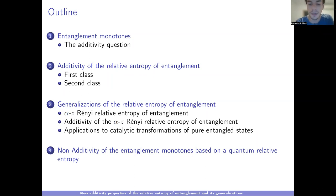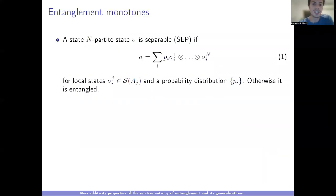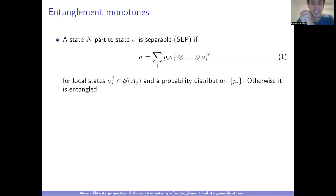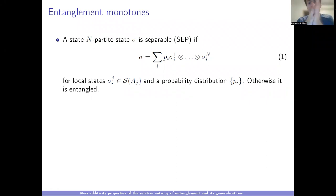What are entanglement monotones? First I define separable states. We have n parties, and a separable state is a convex mixture with probability distribution pi of tensor products of local states — n tensor products of local states. Otherwise, if the state is not separable, I call it entangled.